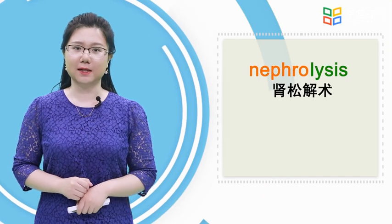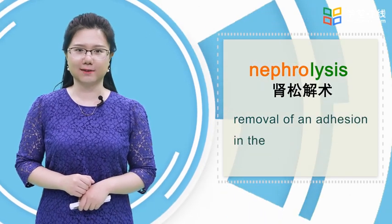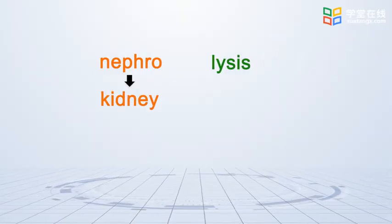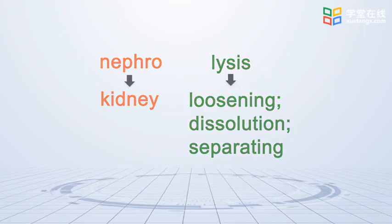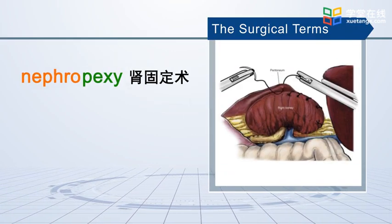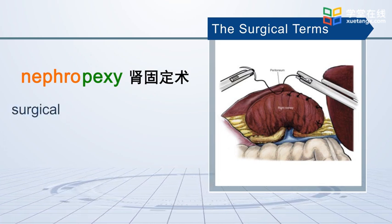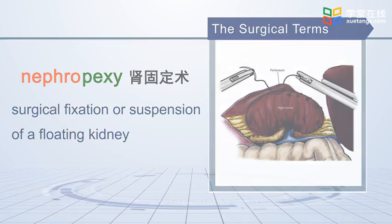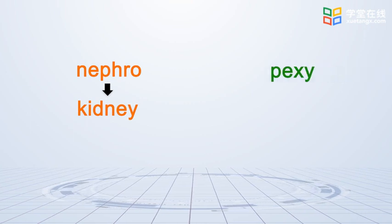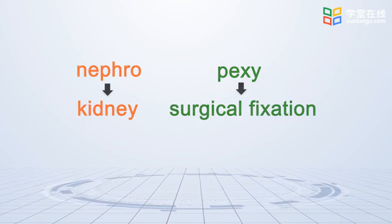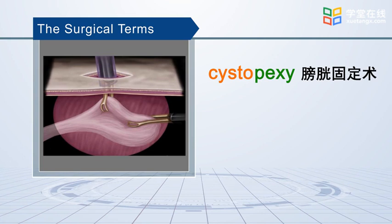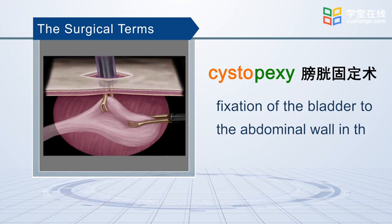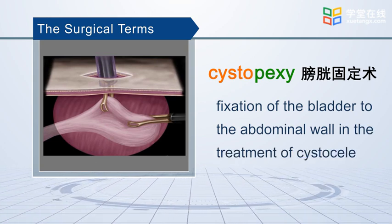Nephrolysis means removal of an adhesion in the kidney. Nephropexy is surgical fixation or suspension of a floating kidney. Cystopexy is fixation of the bladder to the abdominal wall in the treatment of cystocele.